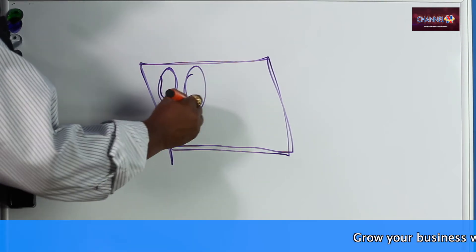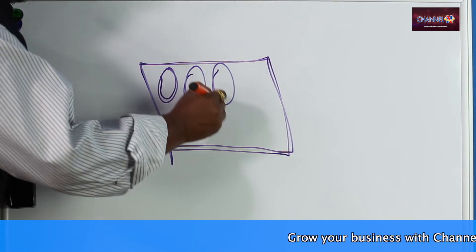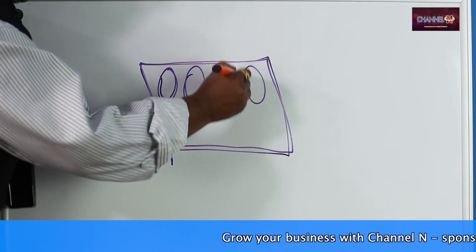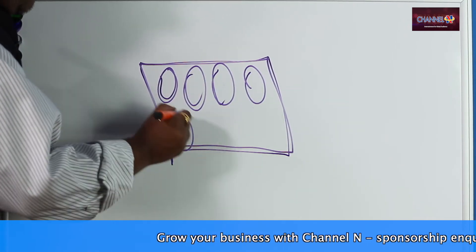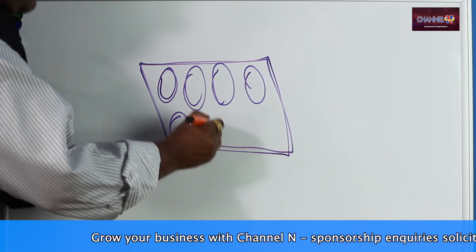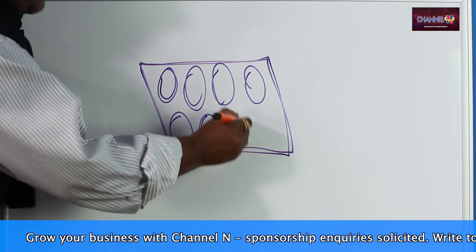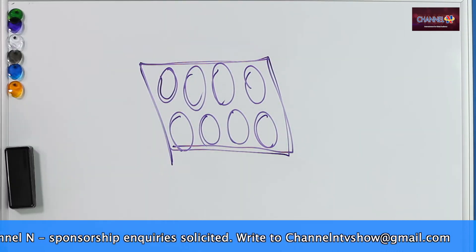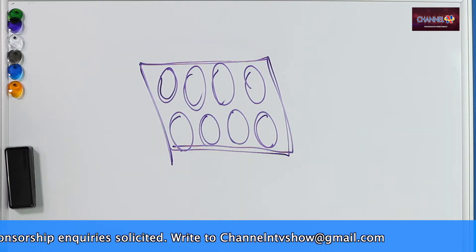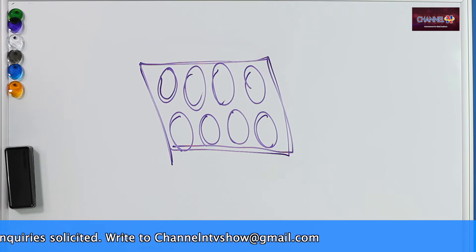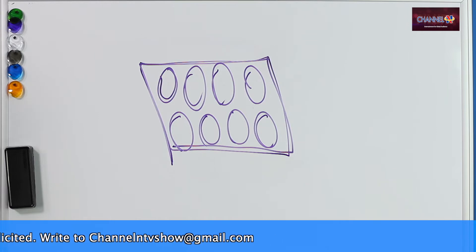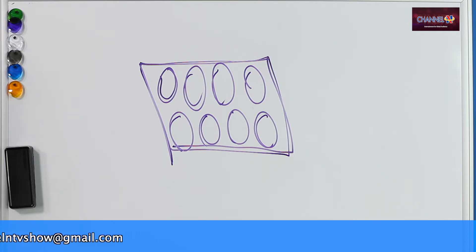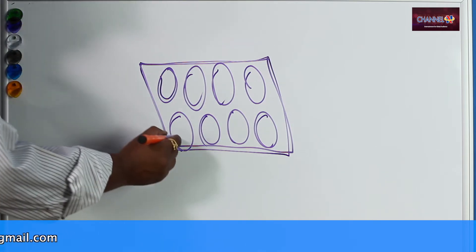Drawing eight circles — one, two, three, four, five, six, seven, eight. For any animal to have four legs, they need to have two legs first. So let me start drawing two legs for each of the eight animals.